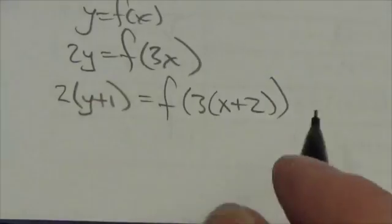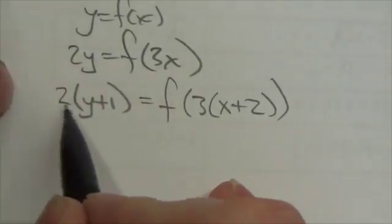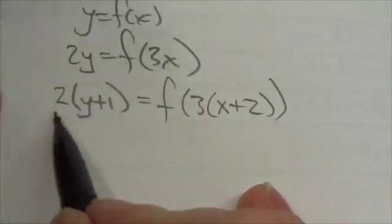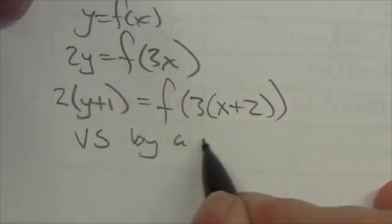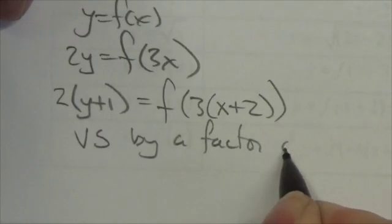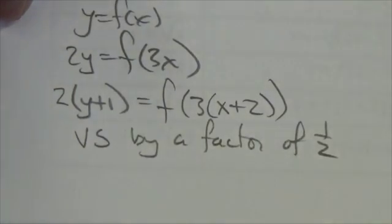Now let's identify the transformations. First of all, if I isolate the y, the first thing I would do is divide by 2. That's a vertical stretch by a factor of 1 half, dividing by 2.